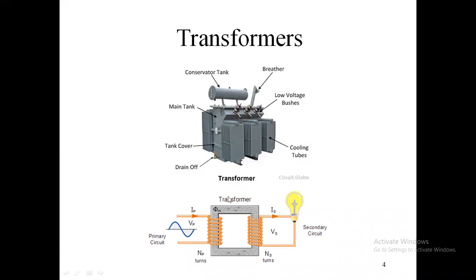The normal power system uses three-phase transformers, which are made by taking three single-phase transformers and connecting them together. We can connect them in either a star connection or a delta connection. When connected in star or delta, we get three-phase transformers that can step up or step down three-phase voltage between high and low voltage levels.